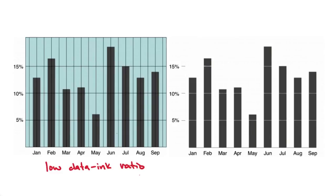On the right-hand side, we see a visualization with the same data with a high data-to-ink ratio. The only ink used is ink that is actually describing the data directly. Comparing both visualizations side by side, the one on the right is not only more pleasing to the eye, but is also much easier to understand.